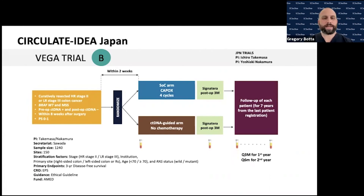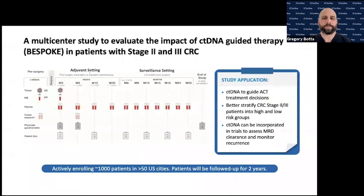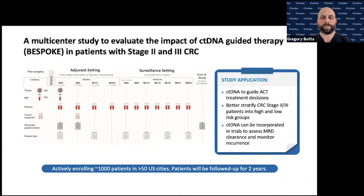Other studies include the Bespoke trial, an observational trial in the adjuvant setting determining whether ctDNA information changes an oncologist's decision to treat or not treat a patient. It allows flexibility: for a high-risk stage two patient with positive ctDNA, move forward with treatment; if ctDNA is negative, forgo treatment. For low-risk stage three patients with negative ctDNA, an oncologist may choose three months of CAPOX versus six months of FOLFOX, to be evaluated at the end of treatment.